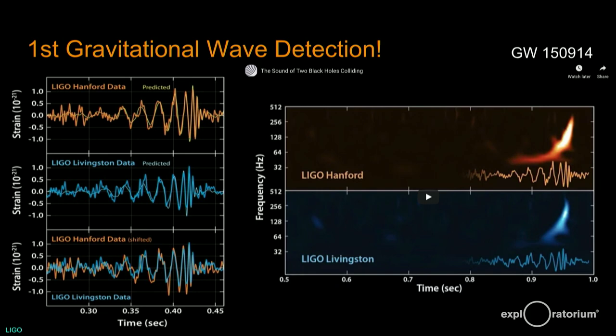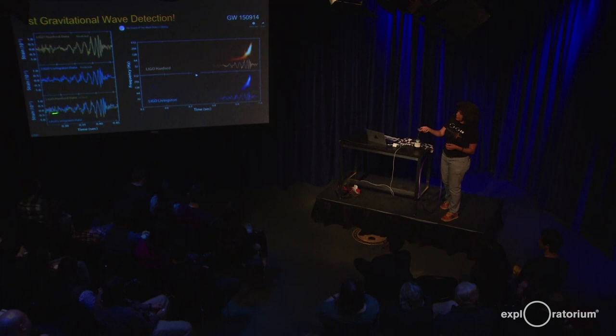The cool thing is: the signal first came in Livingston, Louisiana, and then seven milliseconds later it showed up in Washington. They were like, why do we have this seven millisecond delay? It's the speed of light — that's how long it took light to travel from Louisiana up to Washington. If we shift the data by seven milliseconds, we can overlap them and they're almost perfect. This is confirmation that Einstein was absolutely right: space-time does curve based on mass, we do get gravitational waves, they travel at the speed of light, and gravity does not happen instantaneously.